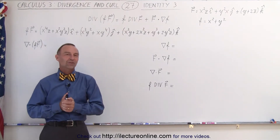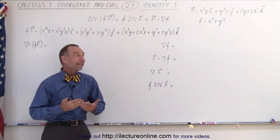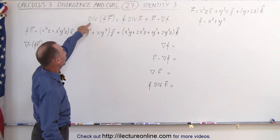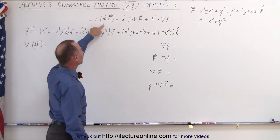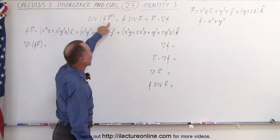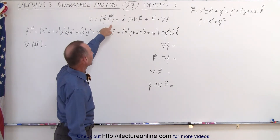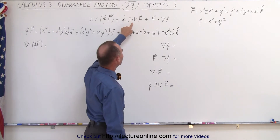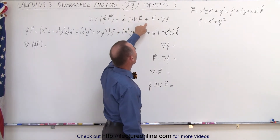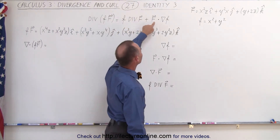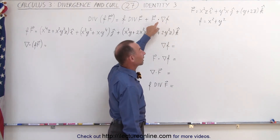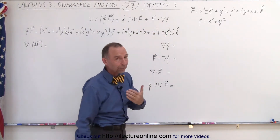Welcome to ElectronLine. Here's our third identity. In this case, what we're doing is we're taking the divergence of a scalar function multiplied by a vector field, and the identity tells us that equals the scalar function times the divergence of the vector field, plus the vector field multiplied by the gradient of the scalar function via the dot product.